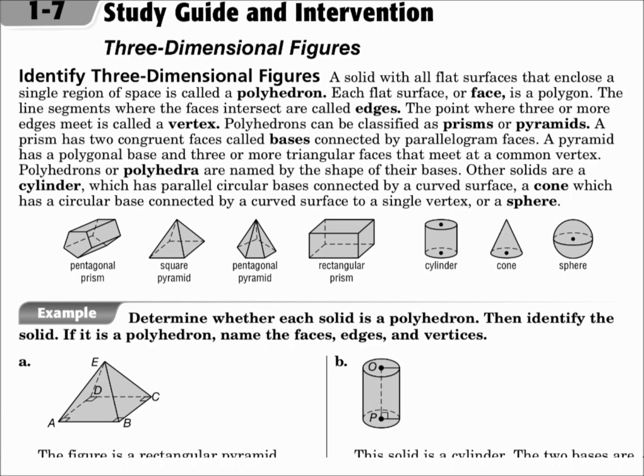Polyhedrons can be prisms or pyramids. Prisms have two bases that are wrapped around usually with rectangles. A pyramid has one base and it's wrapped around with triangles. Remember the difference there. Prism with two bases wrapped around with rectangles or some other type of parallelogram. Pyramid has one base wrapped around with triangles.